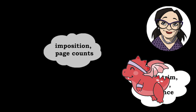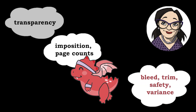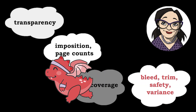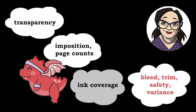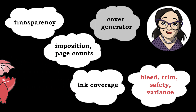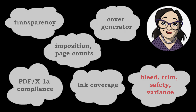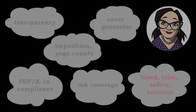Today I'm going to share what variance or print jog means, what safety, trim, and bleed are, and how to confirm these specifications in InDesign, Affinity, and Acrobat Pro. We'll review where these options appear in either the document setup, export settings, or properties.